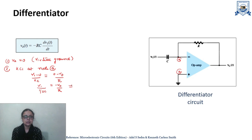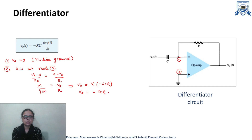This implies that V0 equals V1 times minus SCR, or V0 equals minus SCR times V1. This is the expression for the differentiator in the S domain.